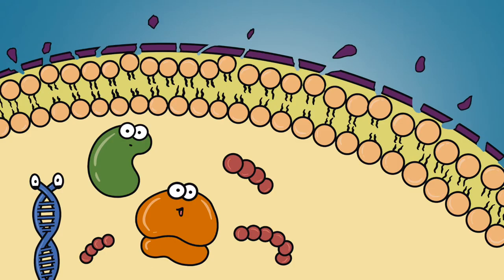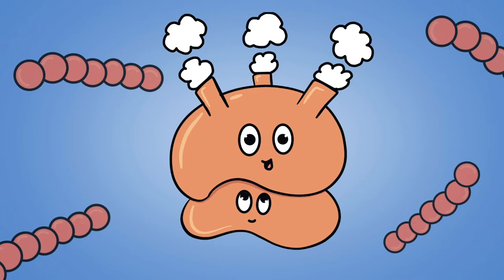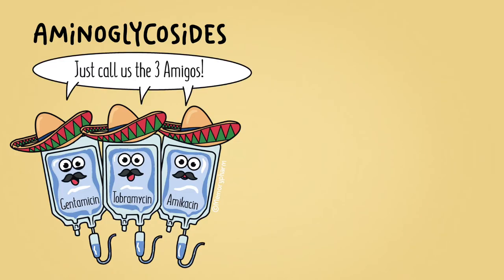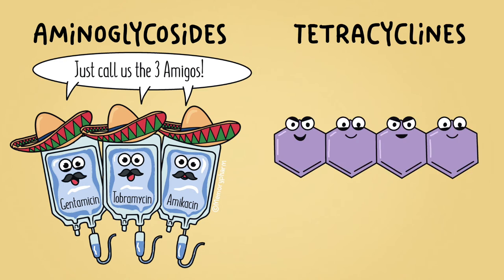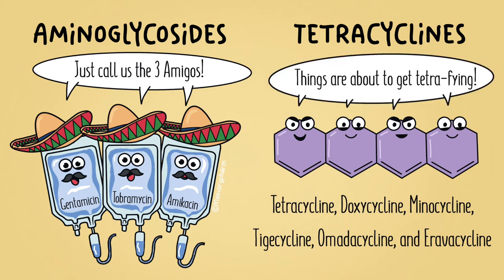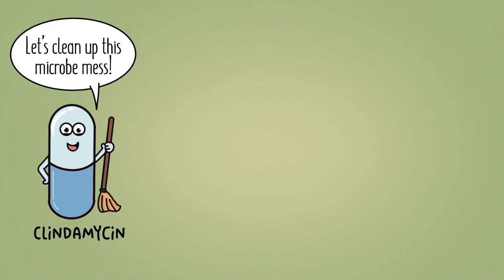Now that we have addressed the cell wall, let's talk about some antibiotics that work in the cytoplasm. Several antibiotics act on the ribosome, a complex molecule that serves as the factory for protein synthesis. Aminoglycosides like gentamicin, tobramycin, and amikacin, as well as tetracycline antibiotics like tetracycline, doxycycline, minocycline, tigecycline, omadacycline, and eravacycline, are protein synthesis inhibitors that irreversibly bind to the small 30S ribosomal subunit.